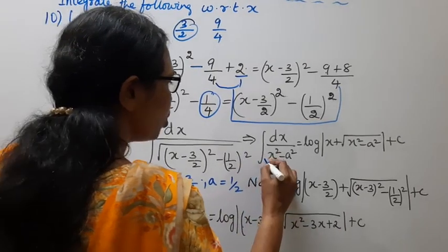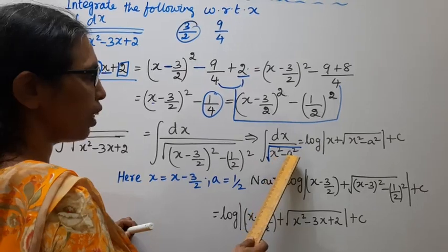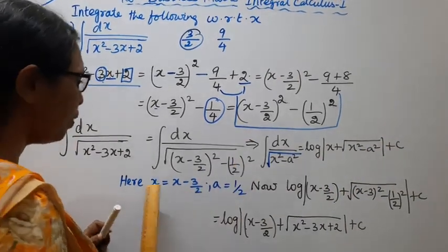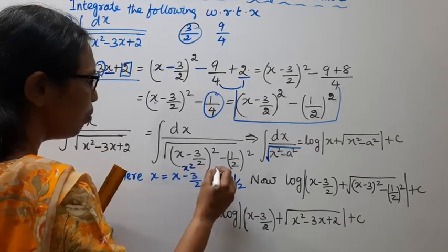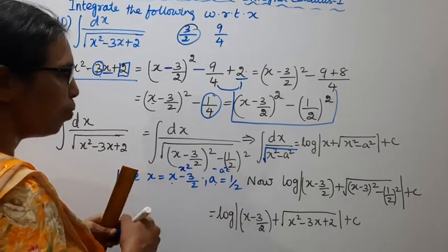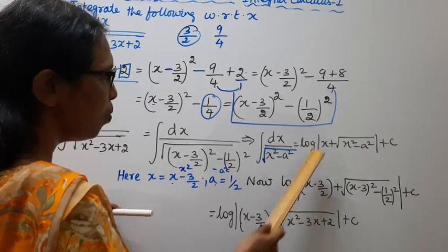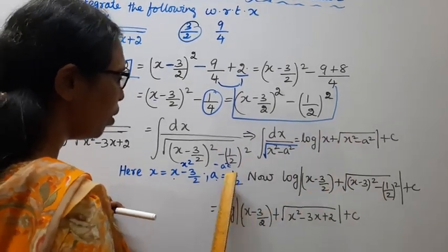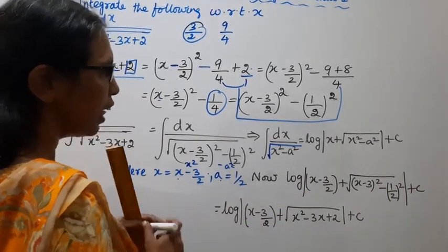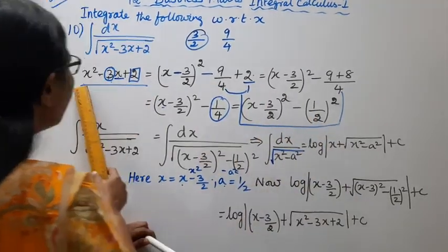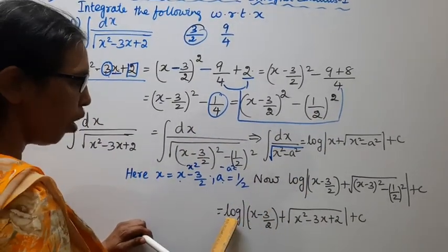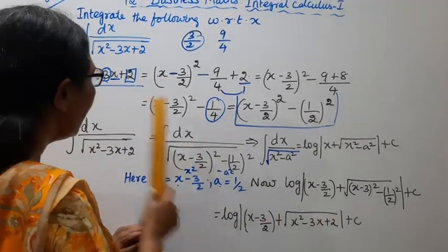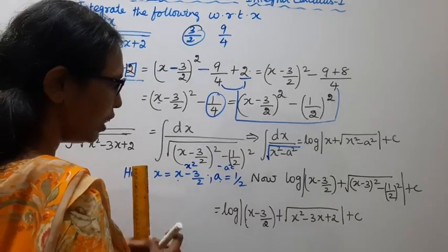It is one formula: integration of dx by square root of x square minus a square equals log of mod x plus square root of x square minus a square. So the answer is log mod of x minus 3 by 2, plus square root of x minus 3 by 2 the whole square minus 1 by 2 the whole square, plus c. Since x minus 3 by 2 the whole square minus half the whole square equals x square minus 3x plus 2, the answer is log of mod x minus 3 by 2, plus square root of x square minus 3x plus 2, plus c.